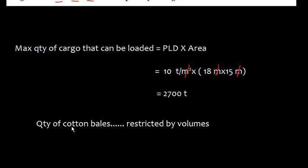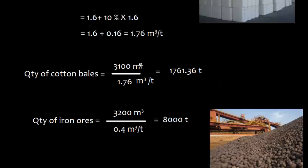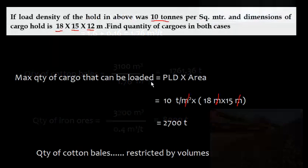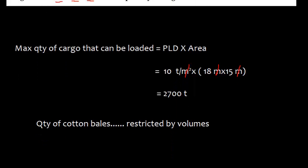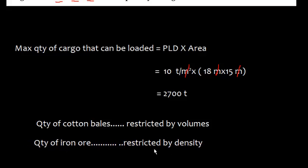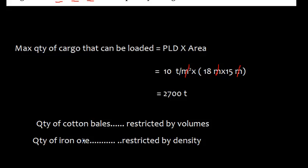The quantity of cotton bales is restricted by volume. Although the maximum quantity by load density is 2,700 tons, when the 3,100 cubic meter bale capacity is full, only 1,761.36 tons of cotton bales fit. For iron ore, the calculated quantity is 8,000 tons, but the hold is restricted by permissible load density, so the maximum iron ore that can be loaded is only 2,700 tons.